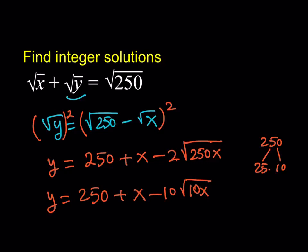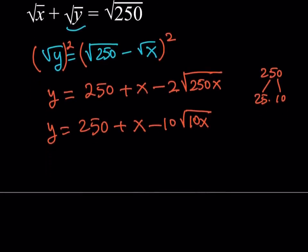All right? Awesome. So, this is the equation that I have. Y is by itself. No radicals. On the right-hand side, we do have a radical. Now, X and Y are both integers, correct? Therefore, this part here also needs to be an integer. 10 times that, which means this needs to be an integer as well. So, square root of 10X is an integer, and it's only possible if X is equal to something like 10 times K squared, where K is an integer.